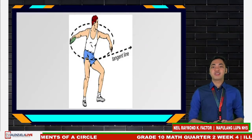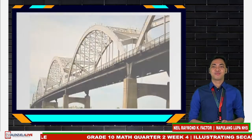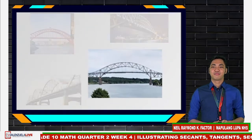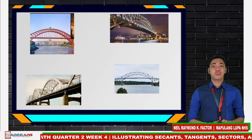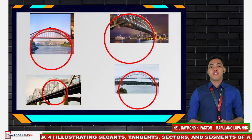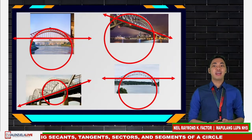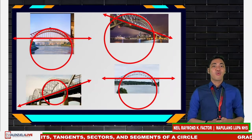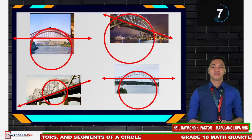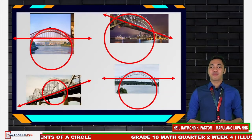Moving forward, in the next slides, let us travel across places where we can see pictures of bridges. We can actually construct circles here for the sake of visualization. The support above the bridge can be a part of the circumference of the circle. If that is the case, what part of the circle is the actual passageway of the bridge? Those are secants.